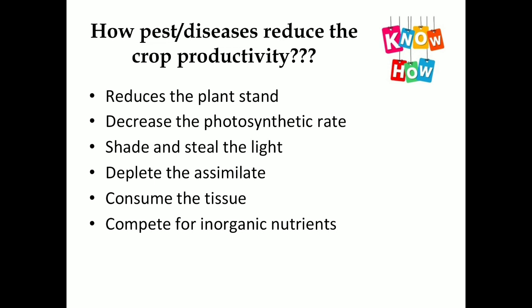How do pests or diseases reduce crop productivity? They reduce the plant stand — that is, they reduce germination. They also decrease the photosynthetic rate, since photosynthesis is directly proportional to yield. Then they shade and steal the light — for example, weeds or pathogens compete. Nematodes deplete the assimilate. Necrotroph-like pathogens consume the tissue. Weeds also reduce productivity by competing for nutrients.